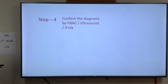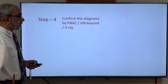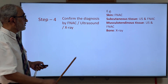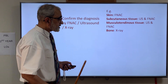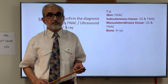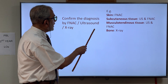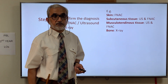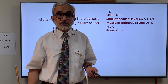Step four is to confirm the diagnosis by fine needle aspiration cytology, ultrasound, and X-ray, depending upon the tissue plane. For skin or subcutaneous tissue, fine needle aspiration cytology is good enough, and one can also do an ultrasound-guided aspiration if needed. For muscular or tendinous tissue, ultrasound and fine needle aspiration cytology are good enough. If you think it is a bone swelling, then X-ray is the appropriate investigation.